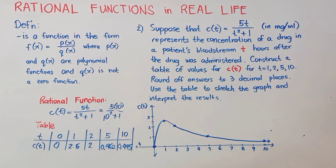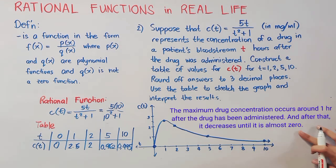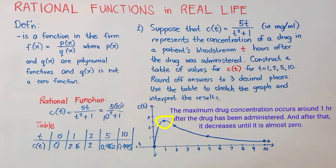Looking at our graph, we can conclude that the maximum drug concentration occurs around 1 hour after the drug has been administered, and after that, it decreases until it is almost 0.